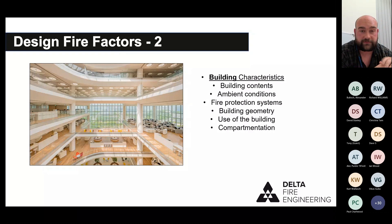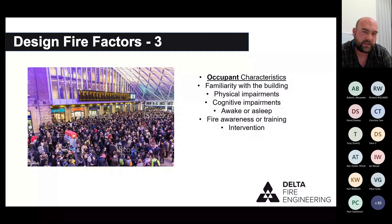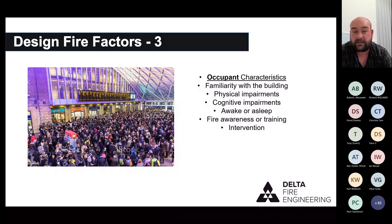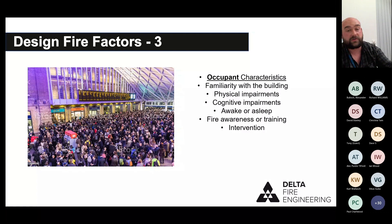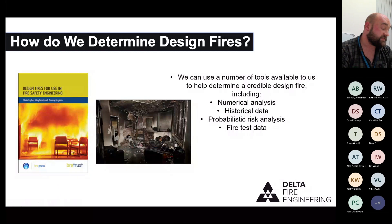I always use a picture of King's Cross here. Who's in the building matters enormously — if you have a space that's well managed and everyone has fire awareness training, the fire may never reach fully developed because someone will put it out. But if you've got a space where people are unable to escape, that will very much impact the way the fire plays out. When developing design fires, we have to be cognizant of all three factors: the fire, the building, and the occupants.